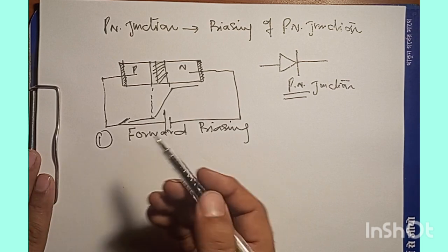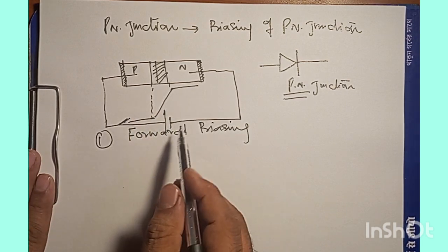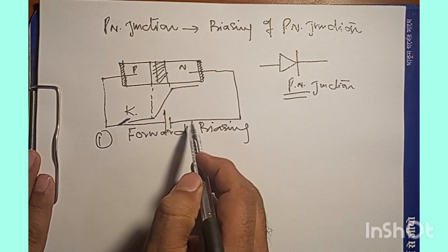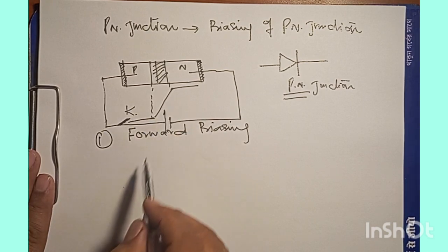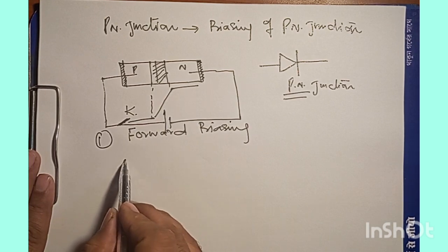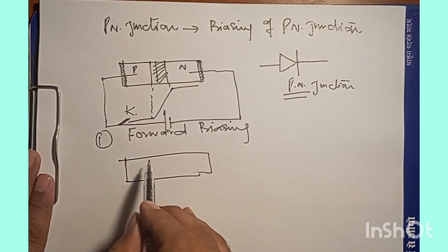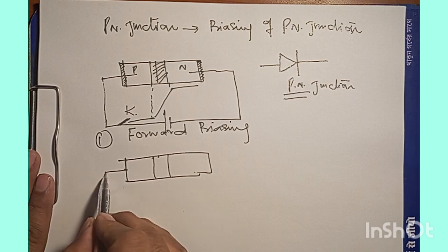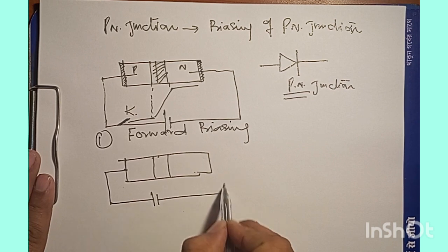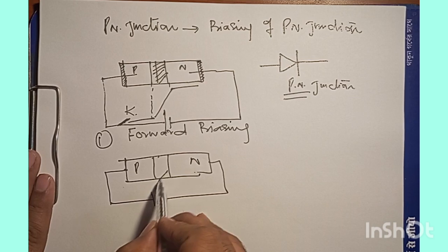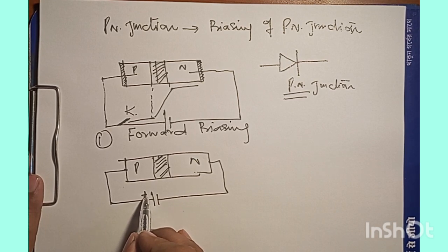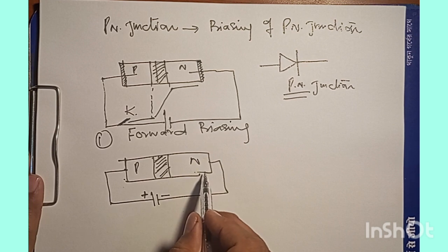What happens when we forward bias this PN junction? When we subject the PN junction to an external cell, we have the PN junction with the potential barrier. We connect it to the battery — positive side to P type and negative side to N side. This is the forward biasing of the PN junction.